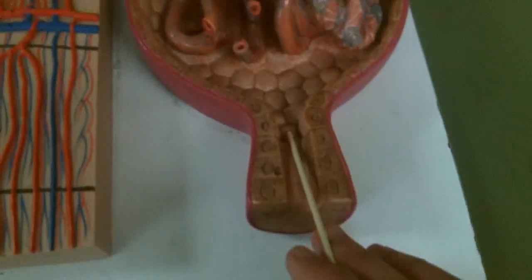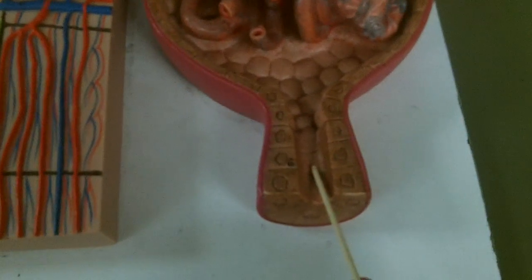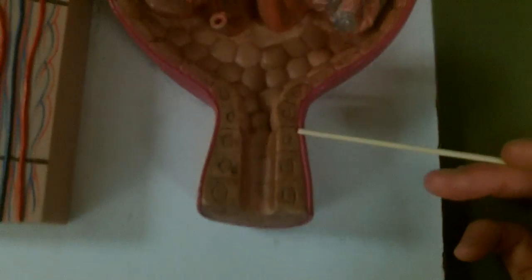Down here we're seeing the beginning of the proximal convoluted tubule and you can see the epithelium is simple cuboidal, but the epithelium of the glomerular capsule is simple squamous.